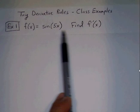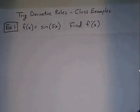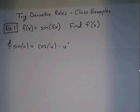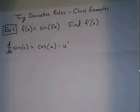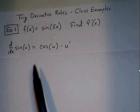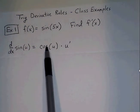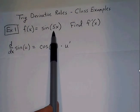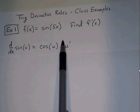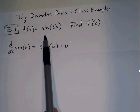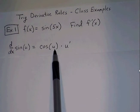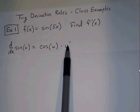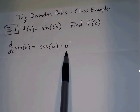We want to find the derivative. Recall the derivative of sine of u is cosine of u times u prime. In this case, u will be represented with 5x. So the derivative of sine of u is simply going to be cosine of 5x times the derivative of 5x, which is 5.